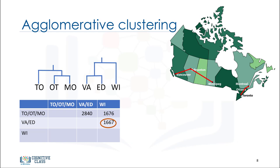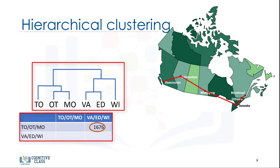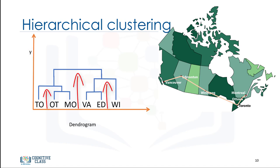In the same way, the agglomerative algorithm proceeds by merging clusters, and we repeat it until all clusters are merged and the tree becomes completed — meaning until all cities are clustered into a single cluster of size 6. Hierarchical clustering is typically visualized as a dendrogram, as shown on this slide. Each merge is represented by a horizontal line. The Y-coordinate of the horizontal line is the similarity of the two clusters that were merged, where cities are viewed as singleton clusters. By moving up from the bottom layer to the top node, a dendrogram allows us to reconstruct the history of merges that resulted in the depicted clustering.